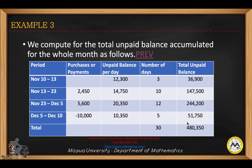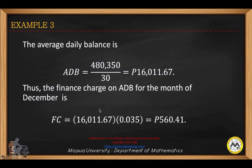Getting the total unpaid balance for 30 days gives $480,350. This is divided by 30 to give the average daily balance, then multiplied by 0.035, which is the current interest rate for credit cards. That gives a finance charge of $560.41.